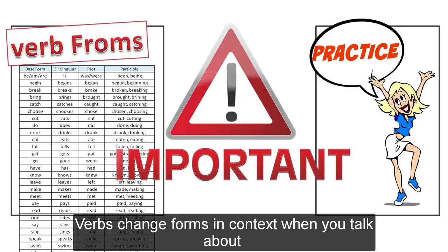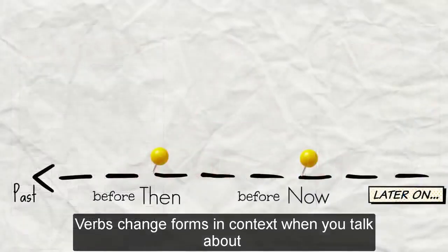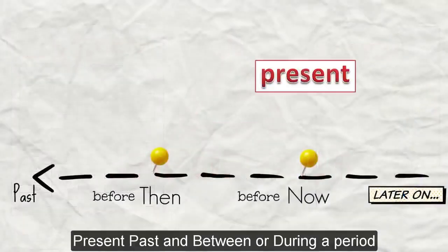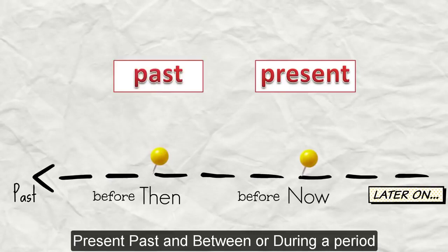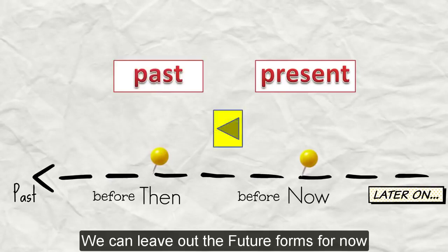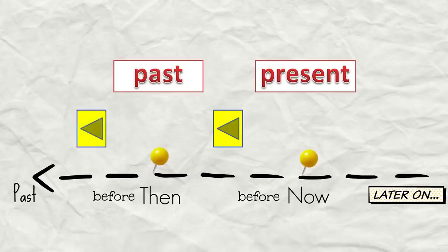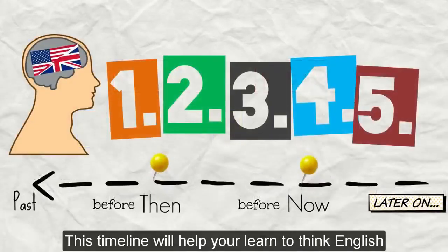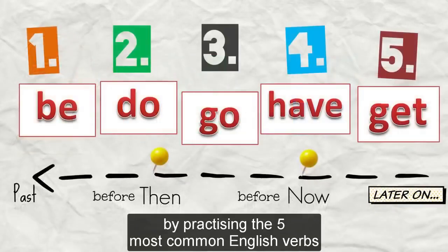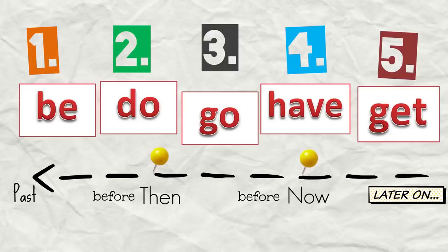Verbs change forms in context. When you talk about present, past and between or during a period of time, we can leave out the future forms for now. This timeline will help you learn to think English by practicing the five most common English verbs: be, do, go, have, get.